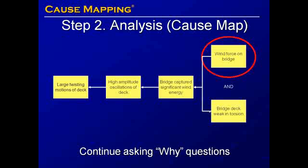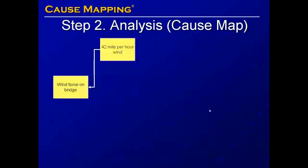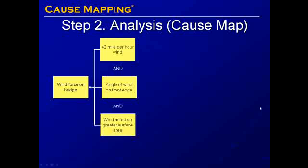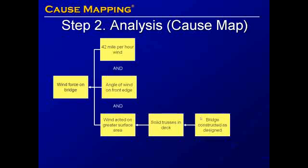First, we will look at the causes of the wind force on the bridge. The wind force was caused by a 42 mile per hour wind, the angle of the wind on the front edge of the bridge, and wind acting on a greater surface area due to having solid trusses in the deck. This was because the bridge was constructed as designed, with solid trusses as opposed to open trusses.